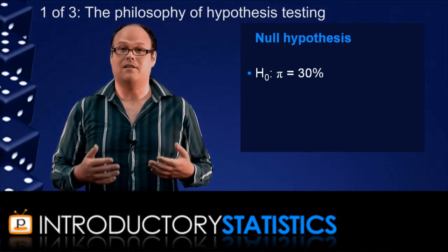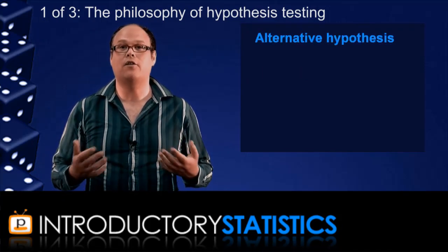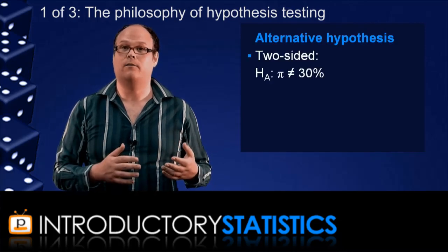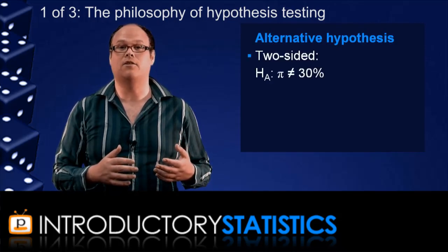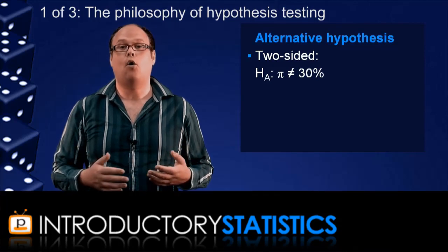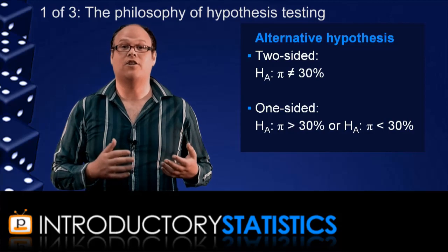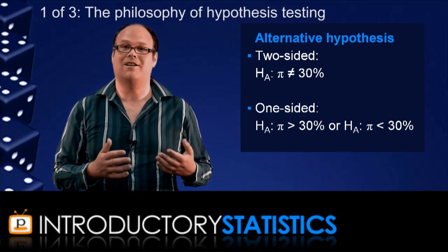When we test this claim, this null hypothesis, we create an alternative hypothesis. Now the alternative hypothesis can be two-sided, which means that it just says that the proportion is unequal to 30%, or it can be one-sided, which means that it specifically says which side of 30% the true proportion is.